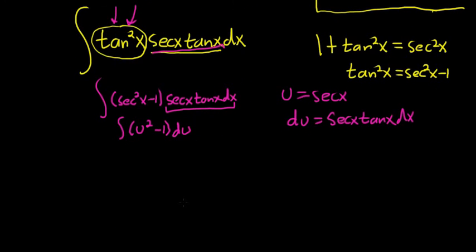All right, now we just use the power rule, right? The power rule says we just add 1 to the exponent. So it will be u cubed over 3 minus, and then when you integrate 1, you just get u. And then plus our arbitrary constant of integration, c.